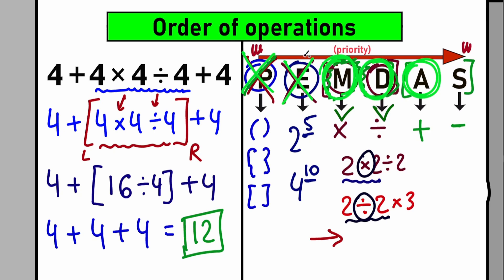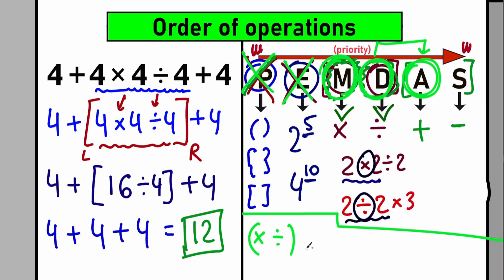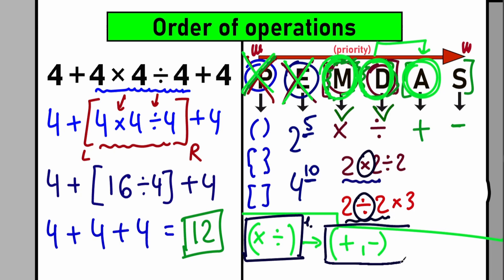Multiplication and division as a group have higher priority than addition and subtraction. The key rule: you need to evaluate expressions with multiplication and division signs first, then evaluate expressions with addition and subtraction. That's step one and step two. Multiplication and division have the higher priority, and our answer is 12.